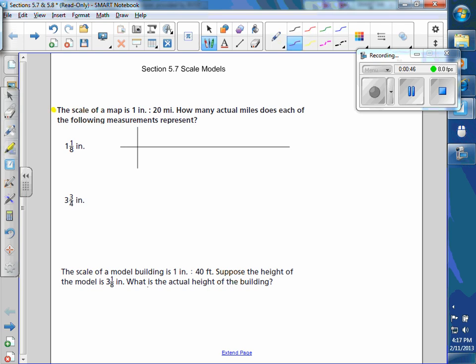So in this first problem here, the scale of a map is 1 inch to 20 miles, so that means for every 1 inch on the map it represents 20 miles in actuality. So what we want to do is figure out how many actual miles does each of the following measurements represent, this being the first one here, 1 and 1 eighth. So we know that 1 and 1 eighth is the value in the scale drawing, so that's in the inches chart, and we want to figure out what x is. So this just allows us to set up a little ratio or proportion. We know from our work on ratio and proportions, these are equal, so we can say 1 times x is x, and that's equal to 20 times 1 and an eighth.